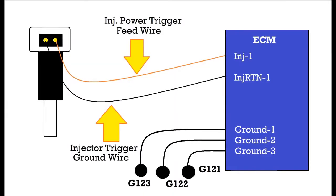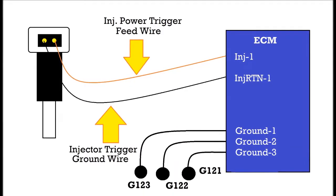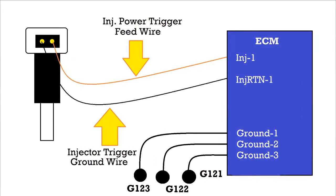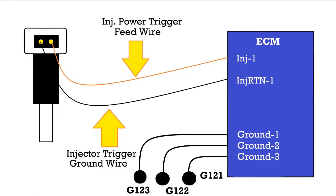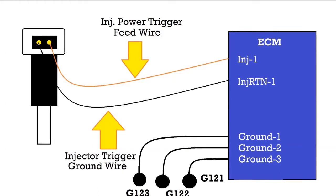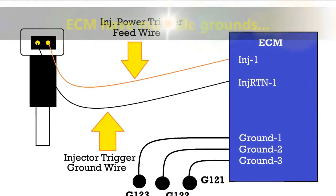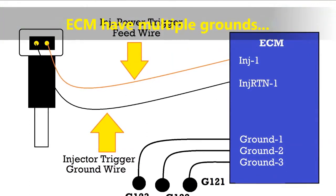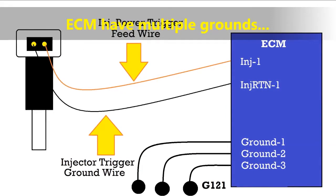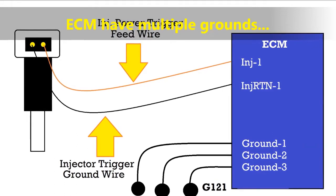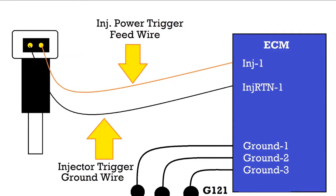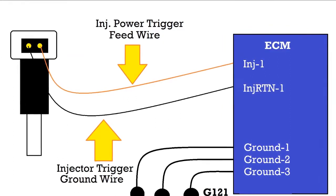If you have a problem with the old multi-port fuel injection, they are triggered on the ground side. You would go over and look at the ground. ECMs usually have multiple grounds. Even on the new ones — where both sides of the injectors are triggered — the ground is fed through multiple sites on the ECM.